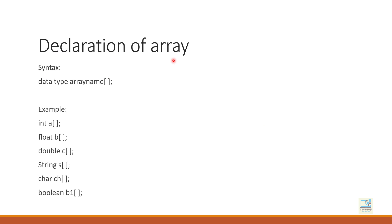Now let's talk about the declaration of array. You need to write only two things: first is the data type and second is the array name. This bracket you see — this is the sign of array. If you don't give this bracket, it will be a normal variable, not an array. If you need to declare an array, the bracket is compulsory. I have declared different types of arrays: integer, float, double, string, character, and boolean. The way we declare all types of arrays is the same.